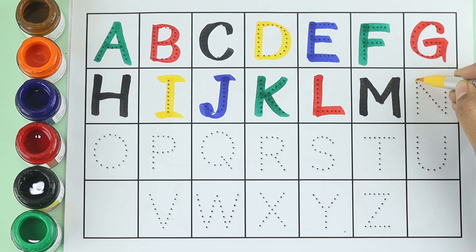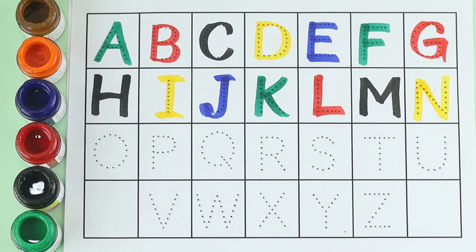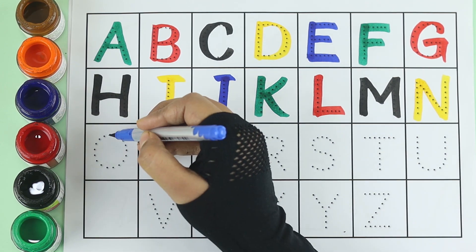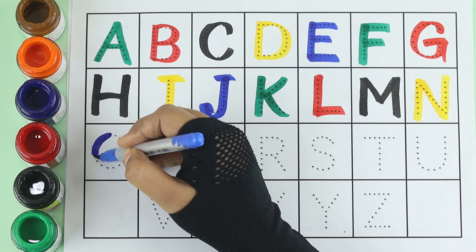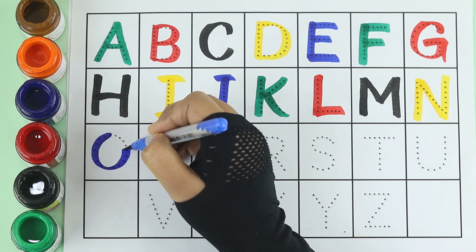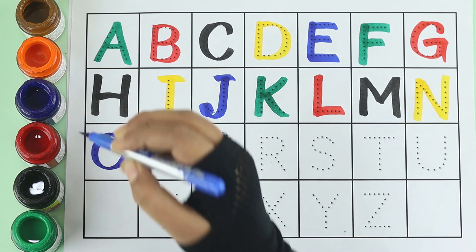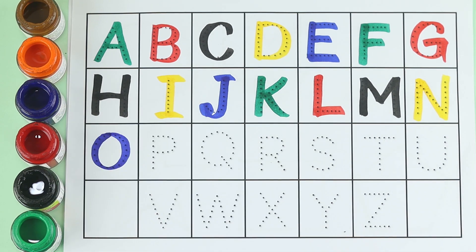Yellow color. N. N for nest. Blue color. O. O for orange.